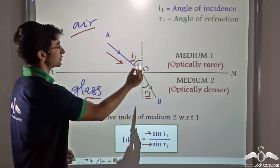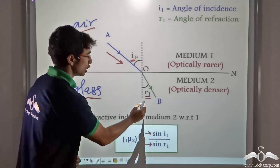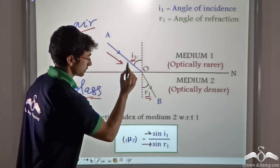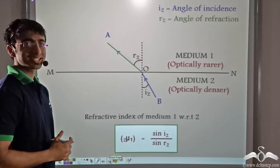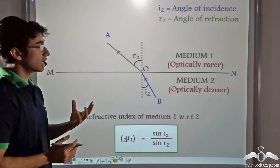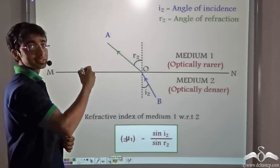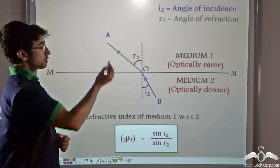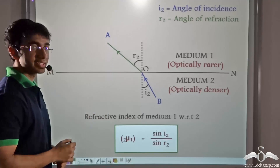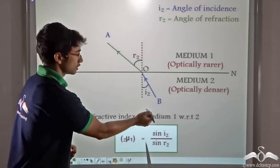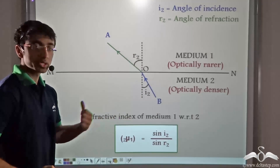That is, the sine of the angle of incidence divided by the sine of the angle of refraction. Now we consider a slightly different scenario. Earlier, the ray of light was incident from the top — that is, from air to glass. Here, the ray of light is incident along the same path but from glass to air.